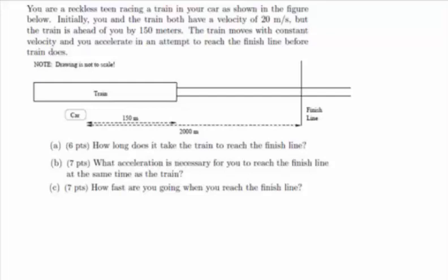You are a reckless teen racing a train in your car as shown in the figure below. Initially you and the train both have a velocity of 20 meters per second, but the train is ahead of you by 150 meters. The train moves with constant velocity and you accelerate in an attempt to reach the finish line before the train does.